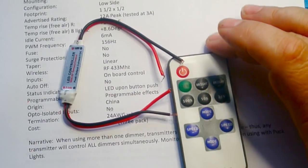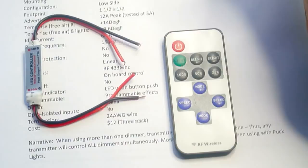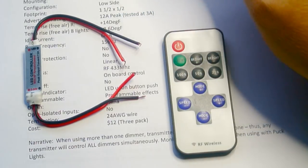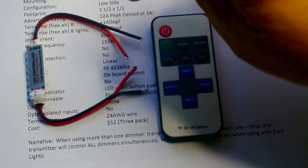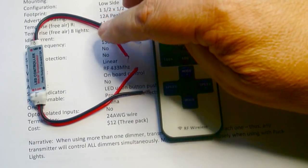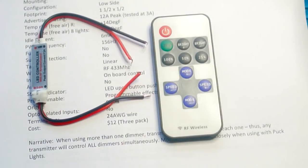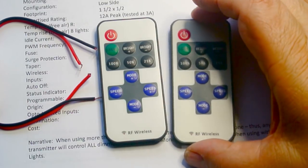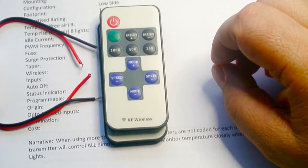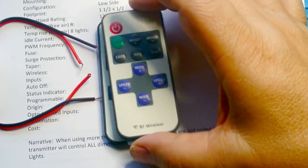And the last one was this generic RF dimmer. $12 for three of them, so the price is right. The PWM frequency is 156 Hz. It's a low-side dimmer. And it draws about 6mA of current in standby. Again, this is limited because it's a 24 gauge wire. And even though I was able to get this to work with the puck lights, I would seriously consider only using this with a strip light. And one of the disadvantages, the RF channel does not have any kind of security on it. So any dimmer will work with any control. And since they're RF, when you try to dim one, you'll dim them all. So I would only use one of these in my RV.